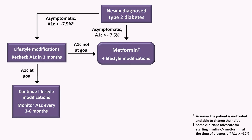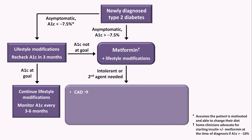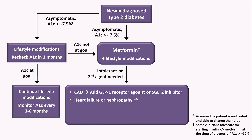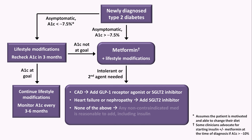For the patient who is either intolerant of metformin, or who needs a second agent because metformin monotherapy was insufficient or because their A1C is so high that monotherapy seems unlikely to be enough: if the patient has coronary artery disease, add a GLP-1 receptor agonist or SGLT2 inhibitor. If the patient has heart failure or nephropathy, add an SGLT2 inhibitor. If the patient has none of the above, any non-contraindicated medication is reasonable, including insulin. You'll want to consider cost, side effect profile, and impact on weight. Allowing your patient to be an active and engaged part of that decision is probably more important than the actual drug chosen.